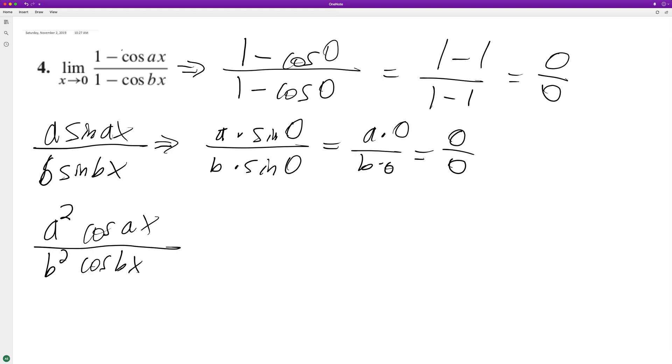Plug in 0 again, we get a squared times cosine of a times 0 over b squared times cosine of 0. And we end up with a squared times cosine of 0—0 is 1—b squared times 1.